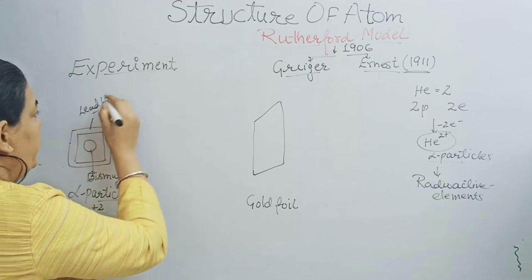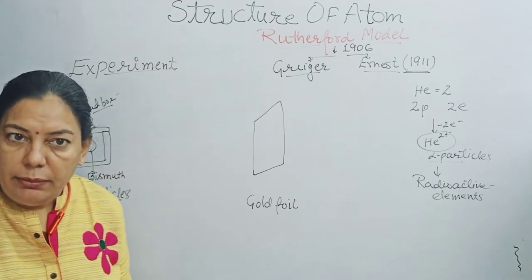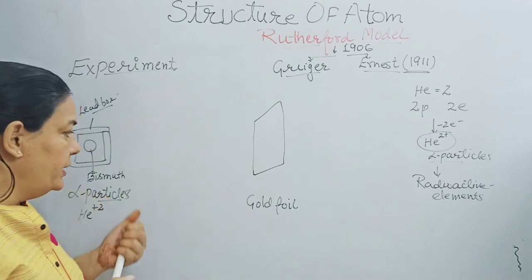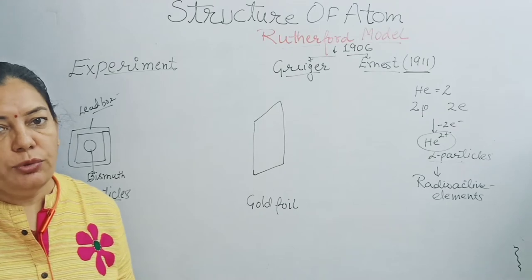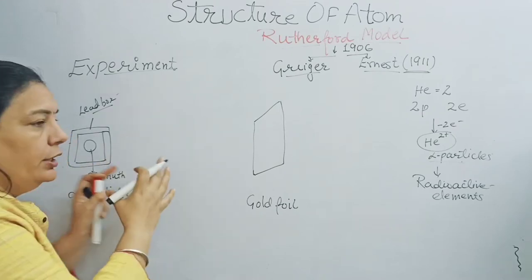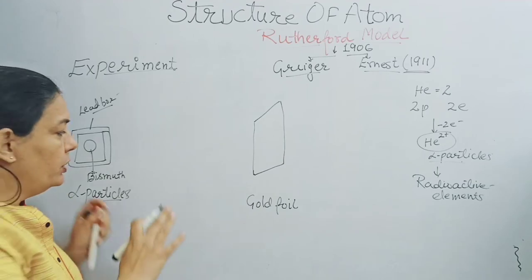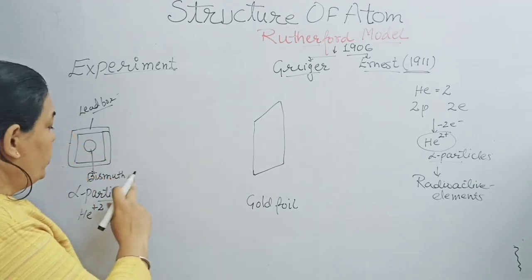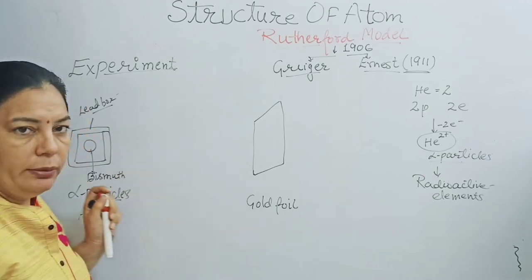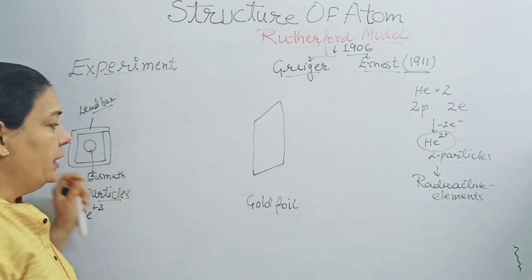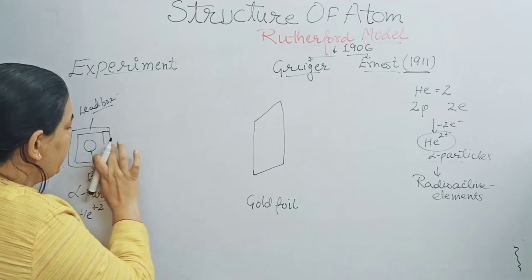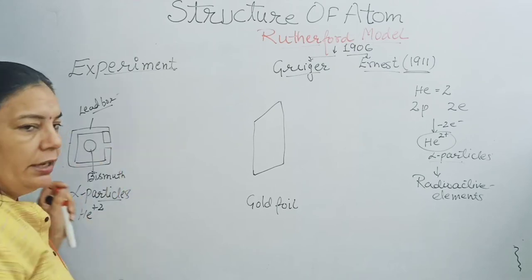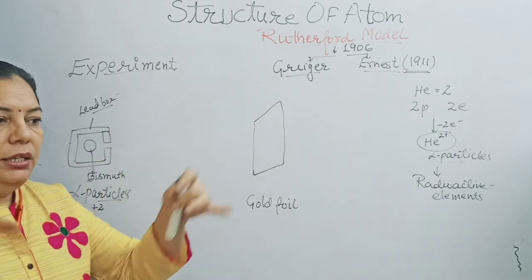Why use a lead box? Because lead is a metal that absorbs radioactive rays — it is a good absorber of radioactive rays. To get a focused beam of alpha particles, he made a slit in the lead box so that radioactive rays would be released as a beam rather than in all directions.